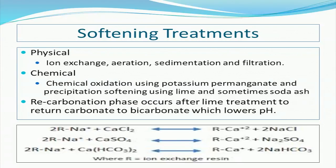Treatment of hardness can be accomplished through either physical or chemical means. Physical treatment typically employs an ion exchange resin, where hardness cations are preferentially exchanged with sodium ions attached to a resin surface. A depiction of the ion exchange process is shown in the image below for different calcium hardness species. Iron and manganese are more effectively removed through either physical or chemical oxidation. In this case, soluble metal cations are oxidized by either aerating them mechanically or using a chemical oxidant such as potassium permanganate. The insoluble metal is then able to precipitate out of solution and can be filtered out of the water.